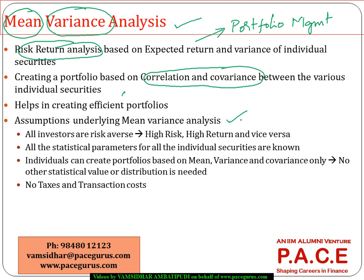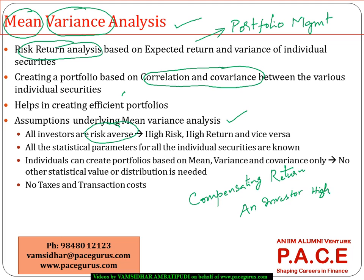Some major assumptions built into this model: first, all investors are risk averse — unless there is a compensating return, no investor wants to take a higher risk. It doesn't mean all of them are low risk-takers, but an investor might go for higher risk only if he knows there is a possibility — not a guarantee, but a possibility — of getting a higher return. Only when the expected return is high is there a motivation for taking high risk. That is one major assumption underlying the mean-variance analysis framework.